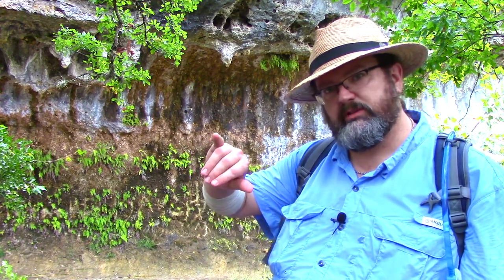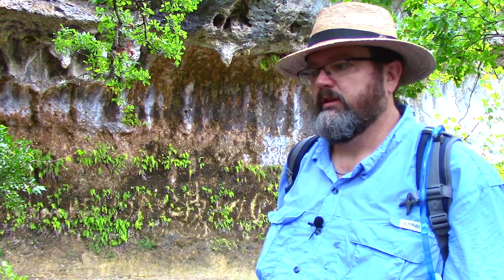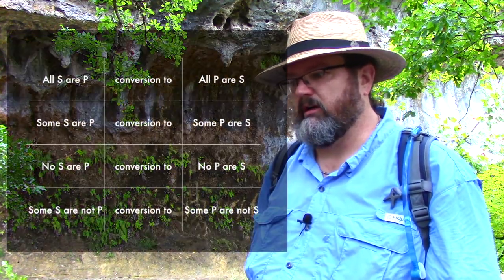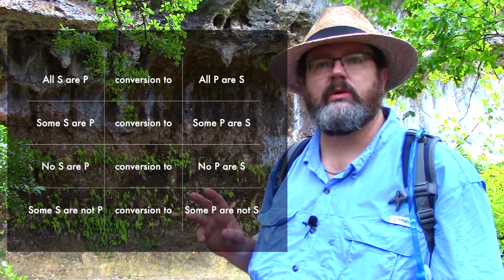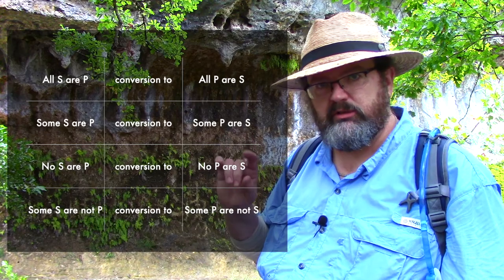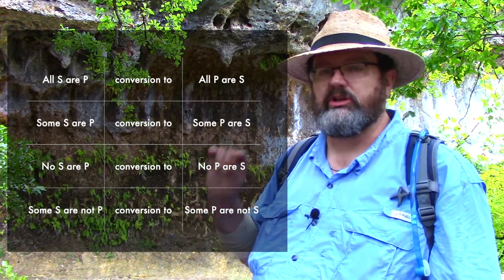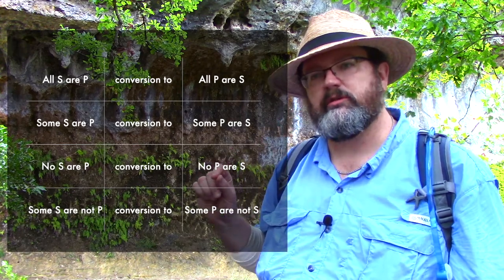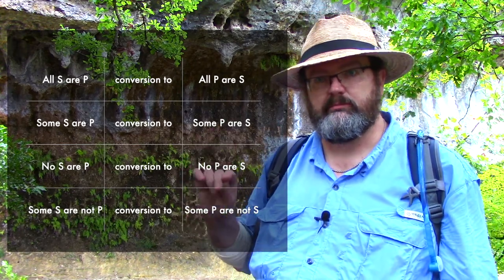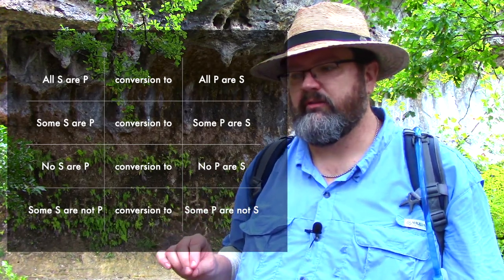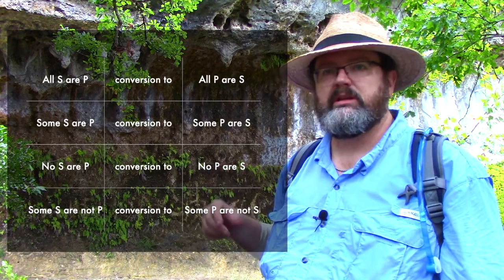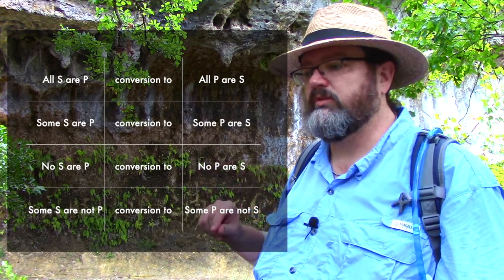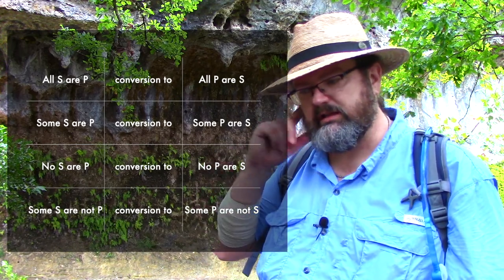Conversion is when you leave the quantifier alone, leave the copula alone, and simply switch the subject and predicate. So with S as the subject category and P as the predicate, the conversion of 'All S are P' (universal affirmative) is 'All P are S.' The conversion of 'Some S are P' (particular affirmative) is 'Some P are S.' The conversion of 'No S are P' (universal negative) is 'No P are S.' And the conversion of 'Some S are not P' (particular negative) is 'Some P are not S.'